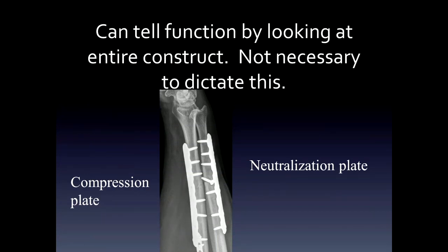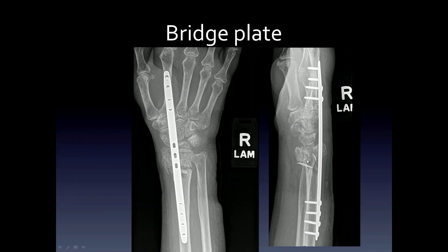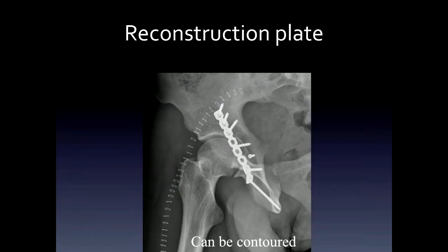You can tell functions of plates by looking at the entire construct, but as radiologists we usually do not necessarily dictate this. On the right, the case we saw before with a lag screw across the fracture site — this is a neutralization plate. On the radius, there's a plate bringing two fracture fragments together in this simple fracture, which will produce compression and allow healing with minimal callus — that's a compression plate. There is also a buttress plate, a bridge plate going across a very comminuted fracture bypassing it, and a malleable reconstruction plate used in complicated surfaces such as the pelvis.